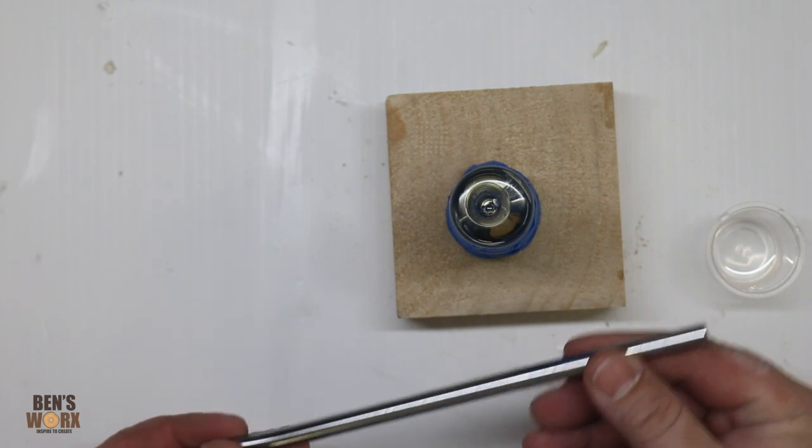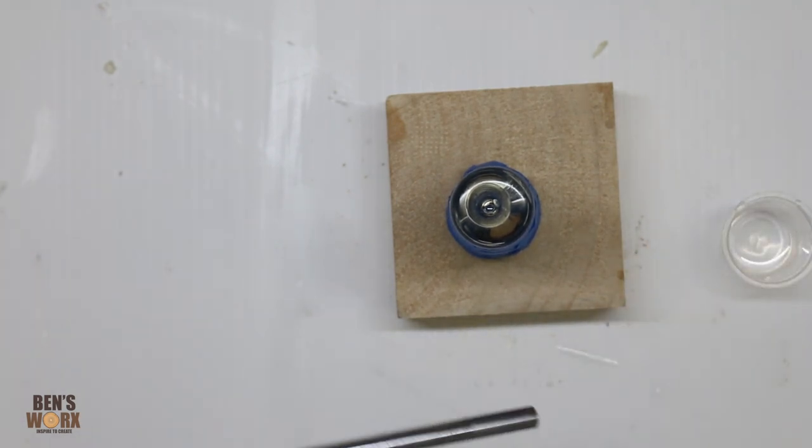So now all that's left is to glue the blade in. I've mixed up a small batch of epoxy. I'm just gonna pour that in, drop the blade in, and we'll have ourselves a screwdriver.